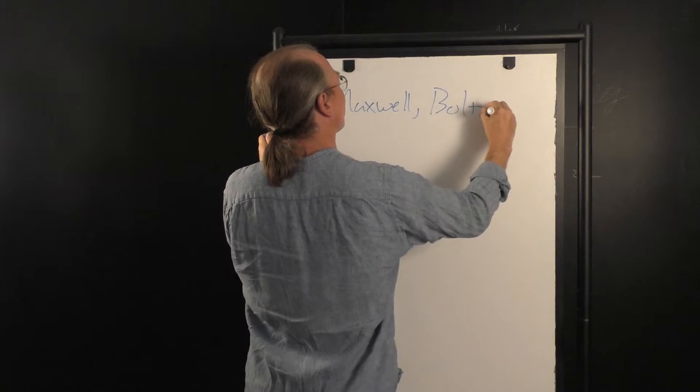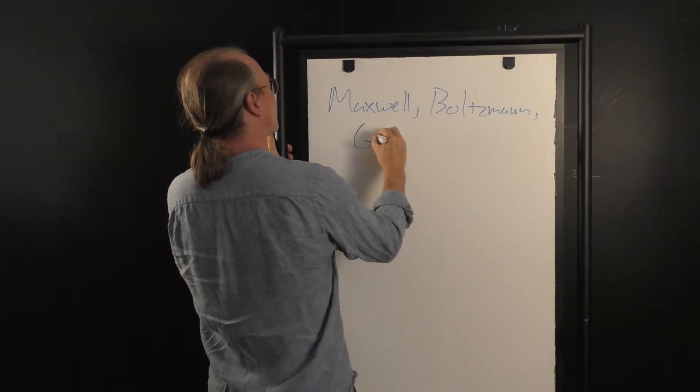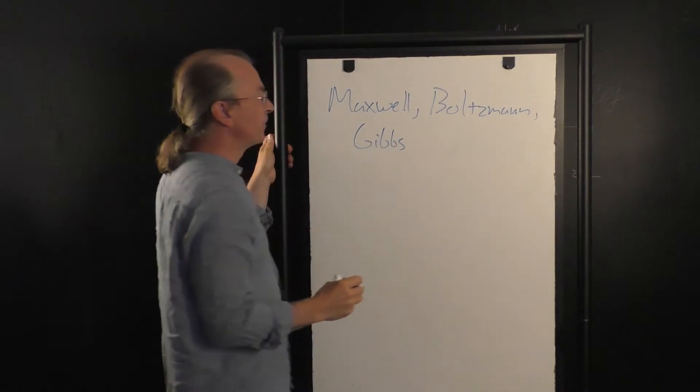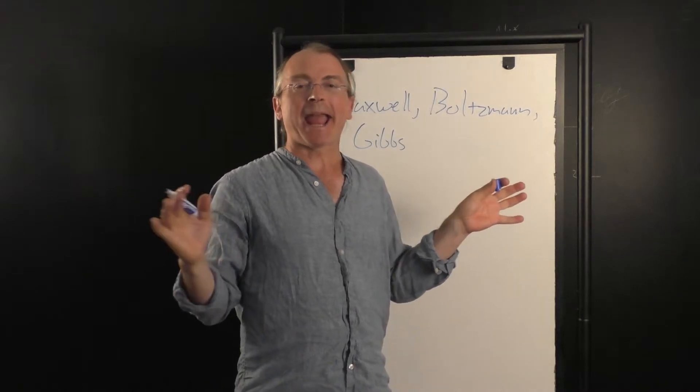Ludwig Boltzmann in Vienna, Maxwell's at Cambridge, or Josiah Willard Gibbs at Yale, they realized that there was this funny quantity called entropy.